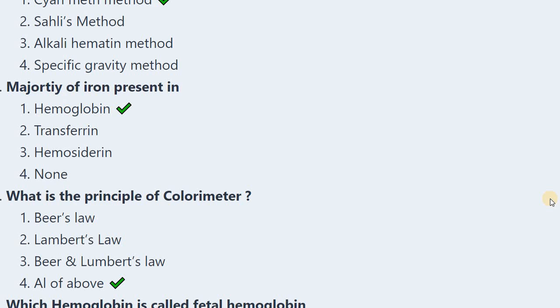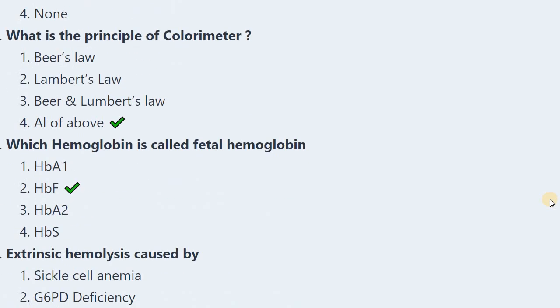Next: The majority of iron in the body is present in — hemoglobin, transferrin, or hemosiderin? Iron is found in the highest amount in hemoglobin.